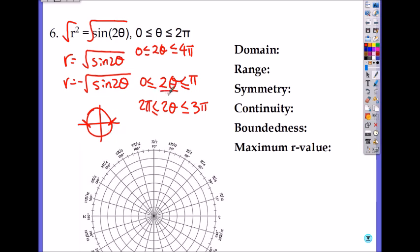So now you divide by 2, 2, 2. So you get first domain from 0 to pi over 2. And here you divide by 2, 2, 2 gets the theta, which is pi to 3 pi over 2.